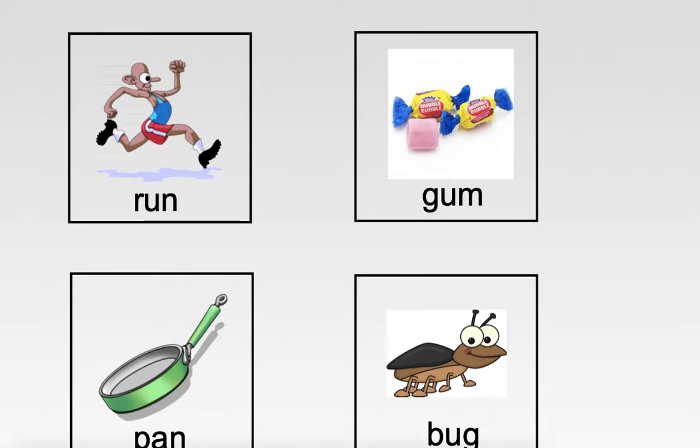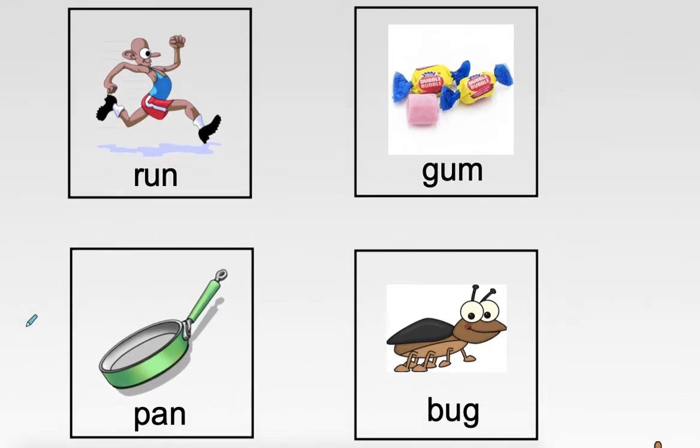Can you point to r, u, n? R, u, n. Run. Run is R, A, N.